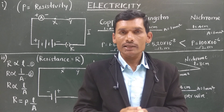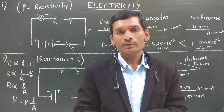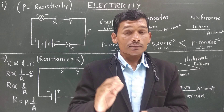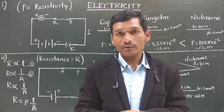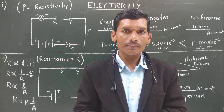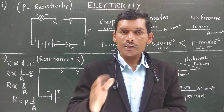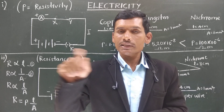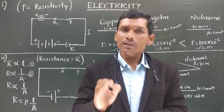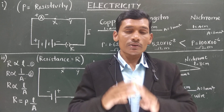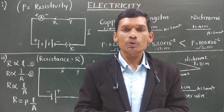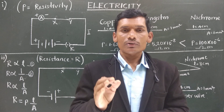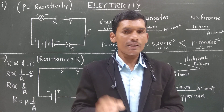Materials with still higher resistance are called bad conductors, and those with the highest resistance are called insulators. Conductors have resistivity ranging from 10⁻⁸ to 10⁻⁶ ohm meter, whereas insulators have resistivity ranging from 10¹² to 10¹⁷ ohm meter.